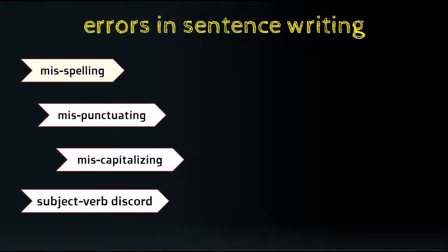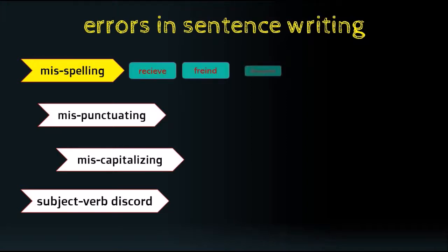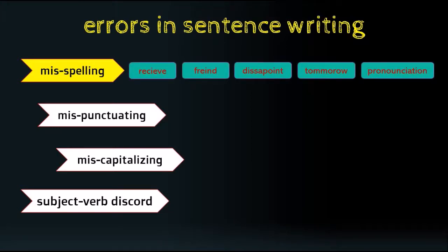The first error is misspelling — the wrong spelling of words. Most non-native speakers might have difficulty differentiating between American or British English words, and even native speakers still make this kind of error. In the first two examples you can find the misplaced vowels I and E. The position of whether I precedes E or E precedes I is a common problem.